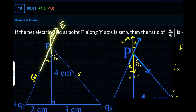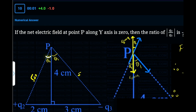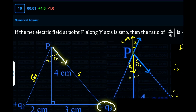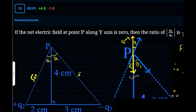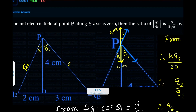Let us call the electric field produced by the second charge as E2. Then the component along the y-axis will be E2 cos theta 2 — because the angle here is theta 2. Similarly, the electric field due to charge number 3 will point towards the charge, making angle theta 1. Its component in this direction will be E3 cos theta 1.